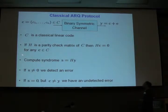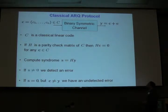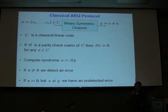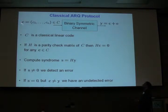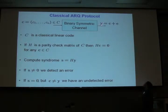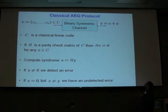We just have to compute the syndrome, that is, compute H times Y. If the syndrome is not 0, then we say some errors occurred, so please retransmit us the same codeword again, or we can just discard the information Y. In any case, if syndrome is not 0, we don't accept Y.